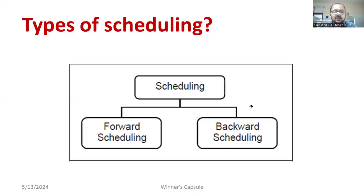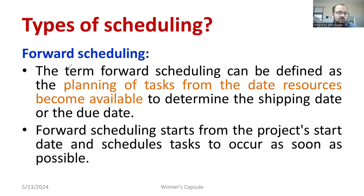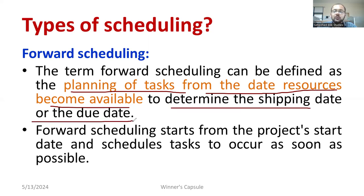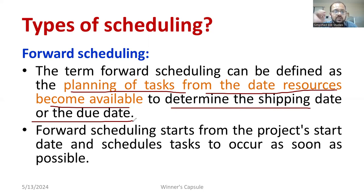The same concept of forward and reverse engineering can be applied here in scheduling. Forward scheduling can be defined as the planning of tasks from the date resources become available to determine the shipping date or due date. We require raw materials, machines, men, etc. to start a project. When all the material is available, you count that date and determine when you can finish and deliver the product. That is called forward scheduling.